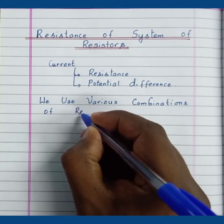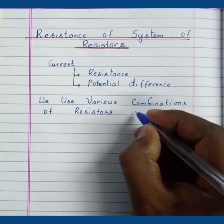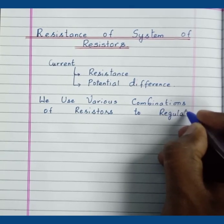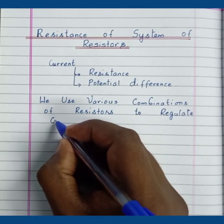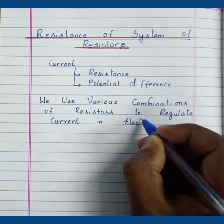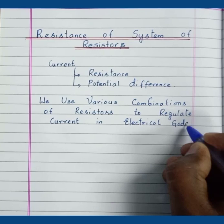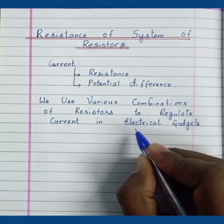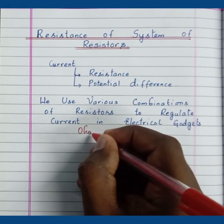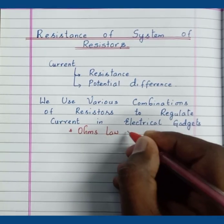Therefore, we use various combinations of resistors to regulate current in electrical gadgets. We use the concept of Ohm's law — that is, V is directly proportional to I, or V equals I times R — to control current by using resistance.